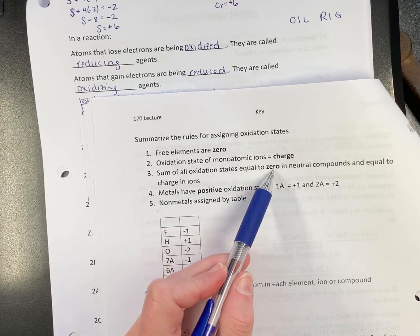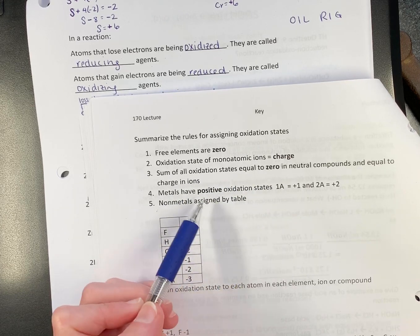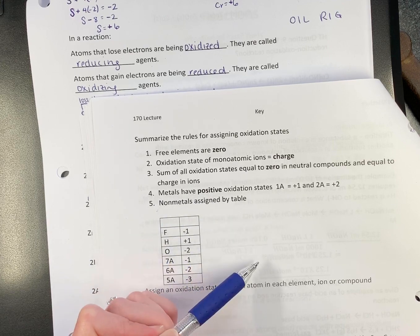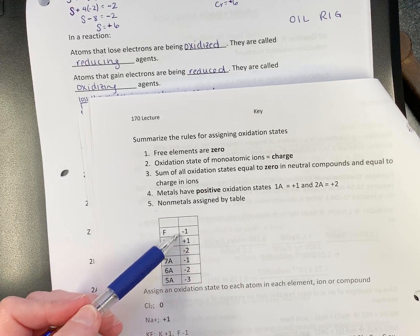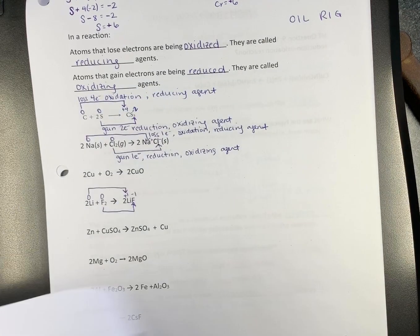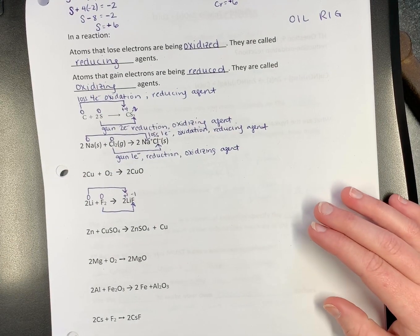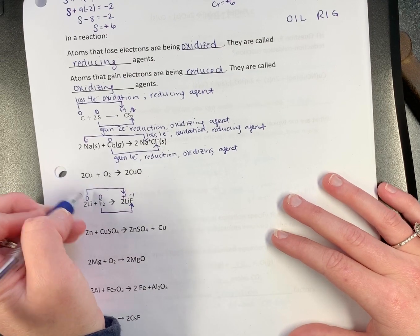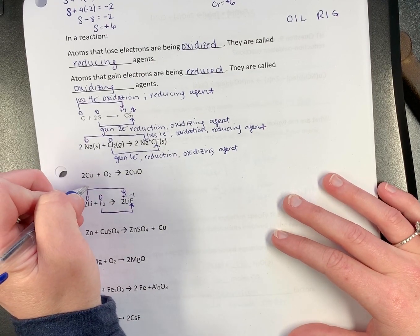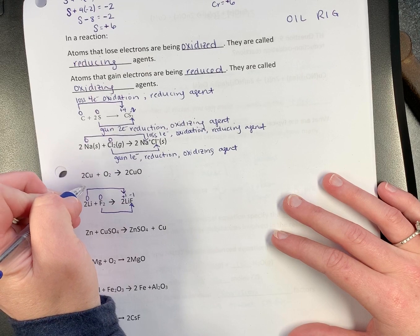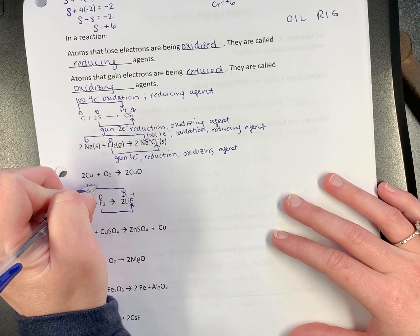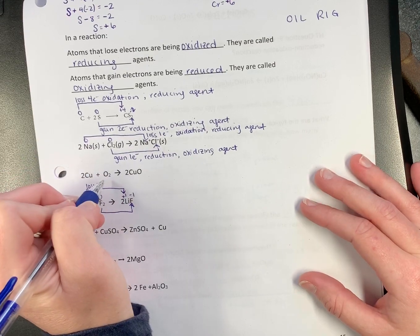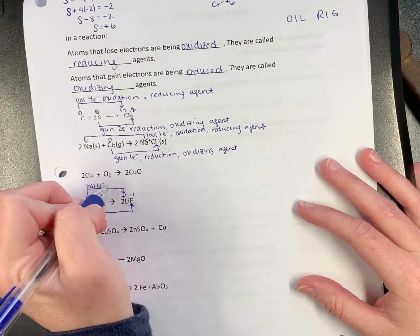If you have a neutral compound, it's zero. If you have an ion, it adds up to the charge. Metals are positive. Non-metals are assigned by the table. And then you have to figure the rest of them out. So with lithium, zero to plus one. Gain or loss? Loss. Loss of one. Loss is oxidation.